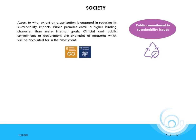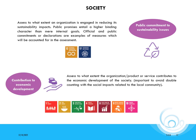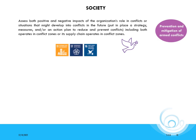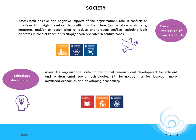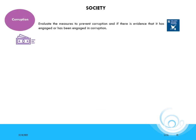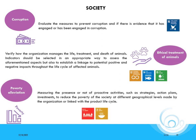Within the society stakeholder group, we have seven different indicators. The first two are public commitment to sustainability issues and the contribution to economic development. The next two are prevention and mitigation of armed conflicts and technology development. And finally, we have corruption, the ethical treatment of animals, and the poverty alleviation indicators.